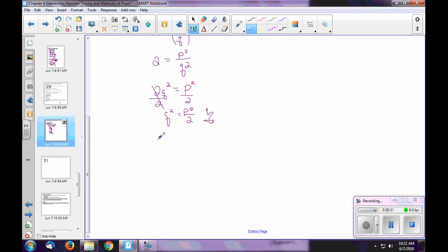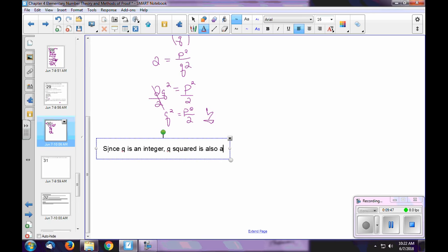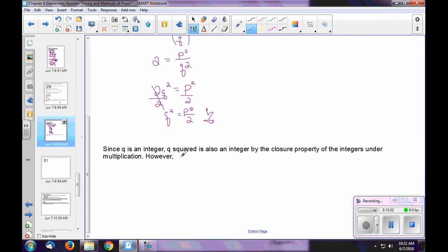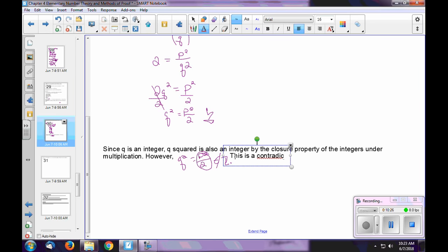Just like we did in the previous proof, take a moment and you're going to write out all of that justification that we just explained. So since Q is an integer, Q squared is also an integer by the closure property of the integers under multiplication. However, what did we learn here? We've shown that Q squared equals P squared over 2 is not an integer. So this piece right here is not an integer. This is our contradiction.